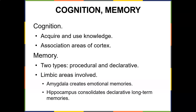Cognition and memory involve acquiring and using knowledge through many association areas of the cortex. There are two types of memory: procedural and declarative. Limbic areas are heavily involved — the amygdala creates emotional memories, which is why a certain smell or place brings back memories, sometimes traumatic ones that are hard to escape. The hippocampus consolidates your declarative long-term memories, moving short-term memory into long-term storage.